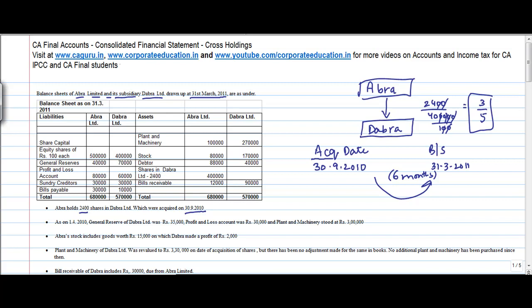So the date when I have to calculate the pre-acquisition profits is the acquisition date which is 3-9-2010. As on 1-4-2010, general reserve of Dabra Limited was 35,000, Profit and loss was 30,000, and plant and machinery stood at 3 lakh. Okay, let me just start jotting down this information.